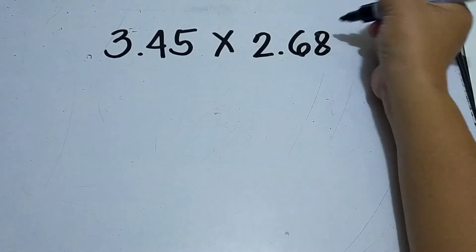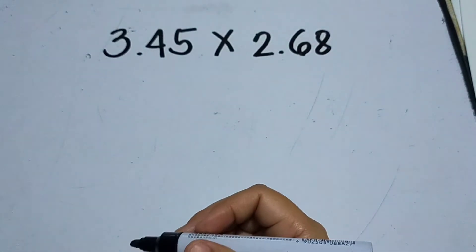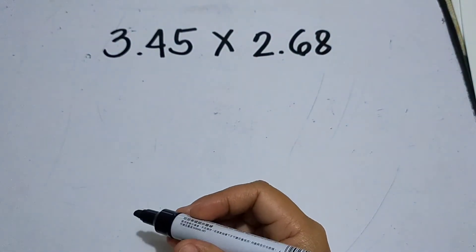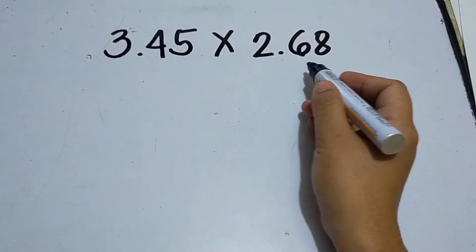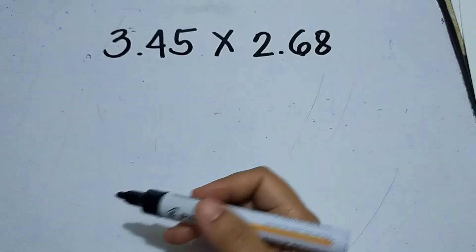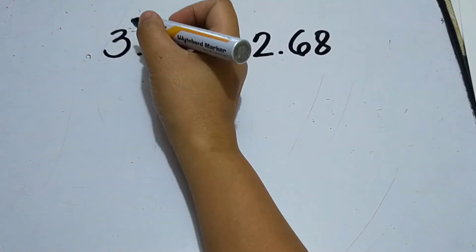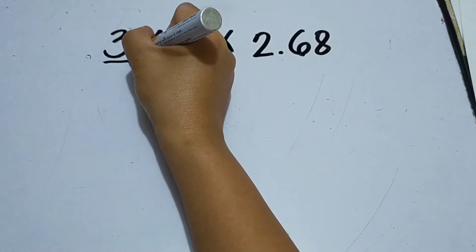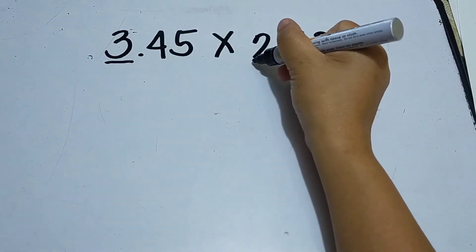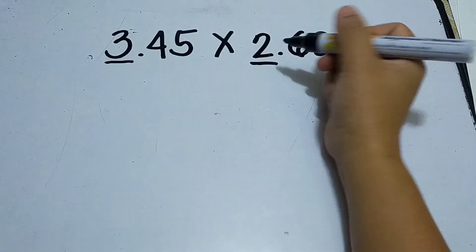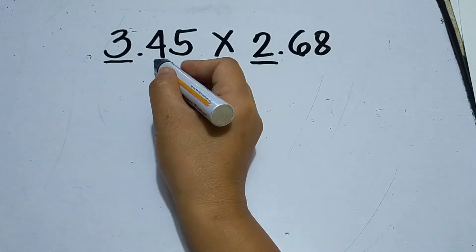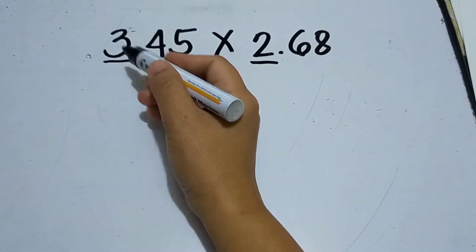Since our topic is all about estimating, before we multiply the given numbers, we have to round this number into the nearest highest possible place value. This digit has the highest place value in the multiplicand, and this one for the multiplier. So round off the multiplicand first. When we round off...